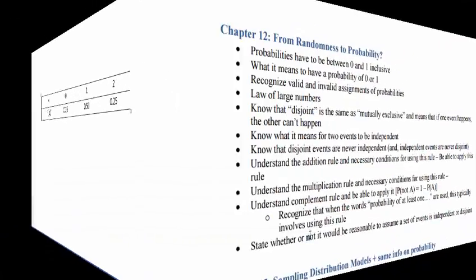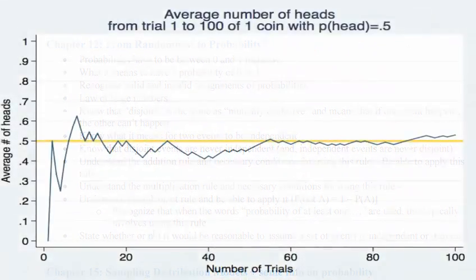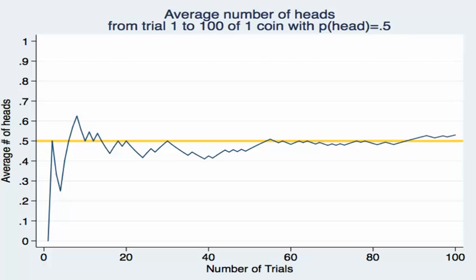Now the law of large numbers: this graphic shows you what it means. If we flip a coin 10 times and get heads 9 out of 10 times, we expected 5 heads but got 9 — we're four over, giving us 90% heads. If we then flip 100 times and get 54 heads, we expected 50 and we're still four over, but now that's only 54%.